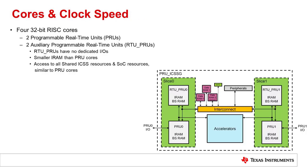At the heart of the PRU ICSSG are four 32-bit RISC cores. These include two Programmable Real-Time Units or PRUs, and two Auxiliary Programmable Real-Time Units or RTU PRUs. During this training, we will verbally refer to the RTU PRUs simply as RTUs. The original PRU ICSS had two PRU cores and no RTU cores.